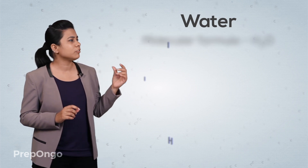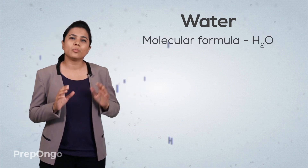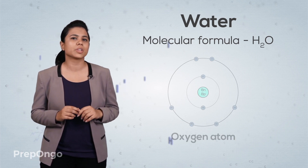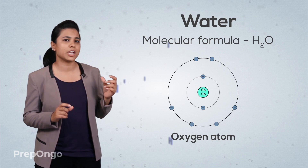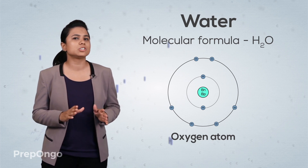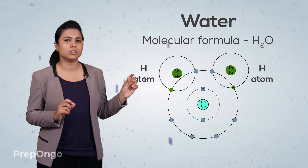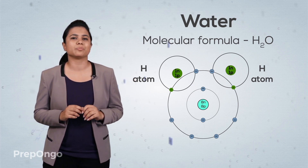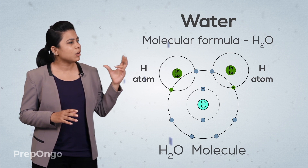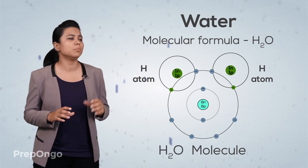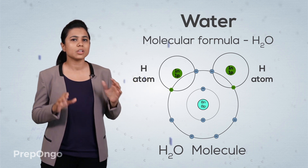The water molecule has a general formula of H₂O and is composed of two hydrogen atoms and one oxygen atom. Oxygen needs to share two electrons so as to attain stability, and hydrogen needs one electron, so it will share one electron. In this way all three atoms share and balance themselves to form a water molecule.